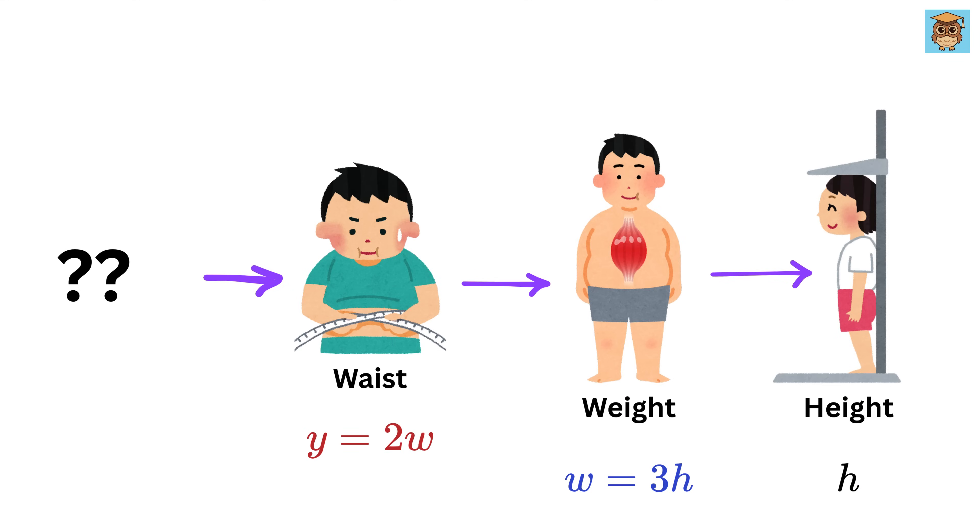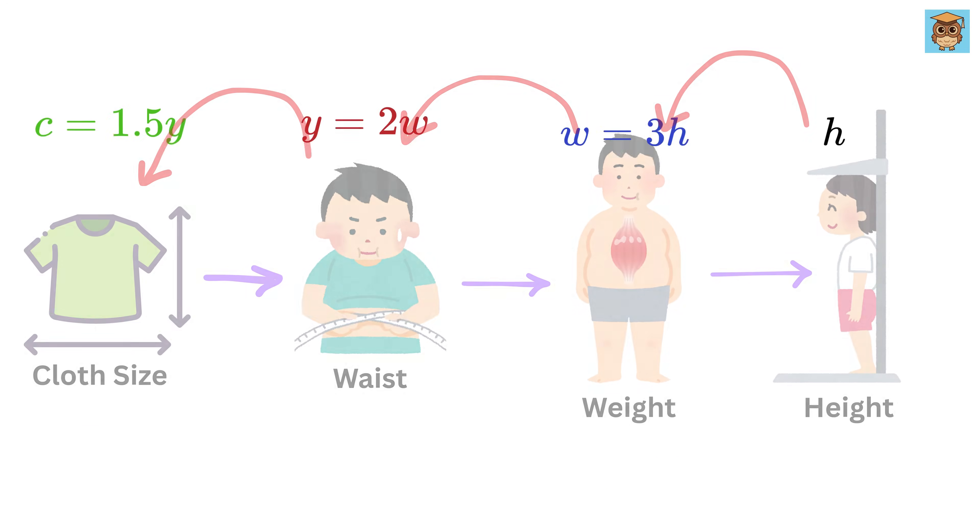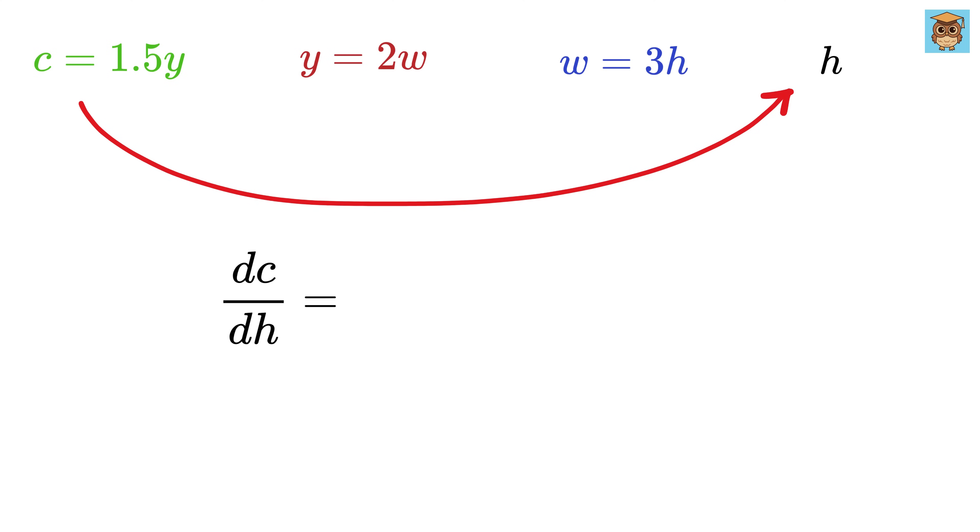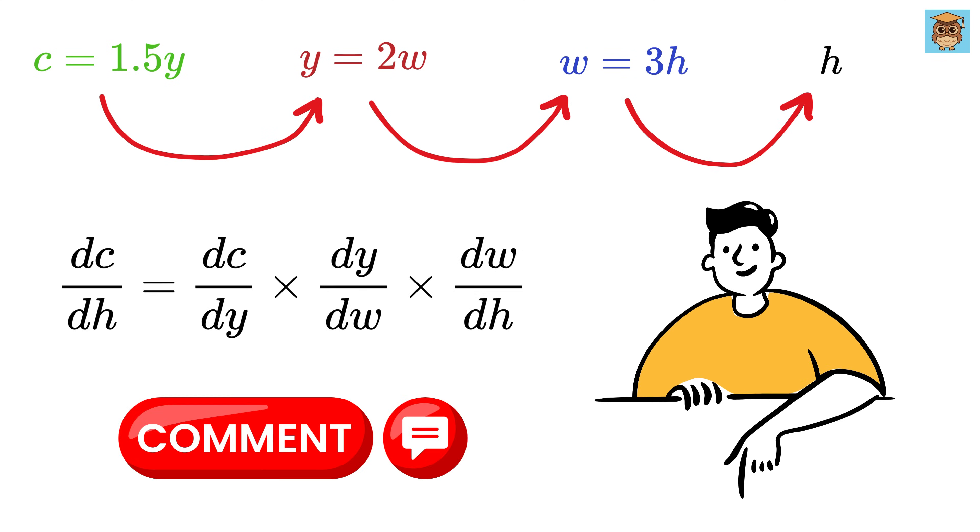Also, this doesn't stop at only one layer in the chain. We can easily extend it further. For example, let's say clothing size, which we'll call c, depends on waist size. Maybe the relationship is simple, like c equals 1.5 times y. Now we've added another link in the chain. Height affects weight, weight affects waist, and waist affects clothing size. Using the chain rule again, we can find how clothing size changes with height by multiplying all the rates together like this. So can you let me know in the comments what will be the value of dc over dh using chain rule?